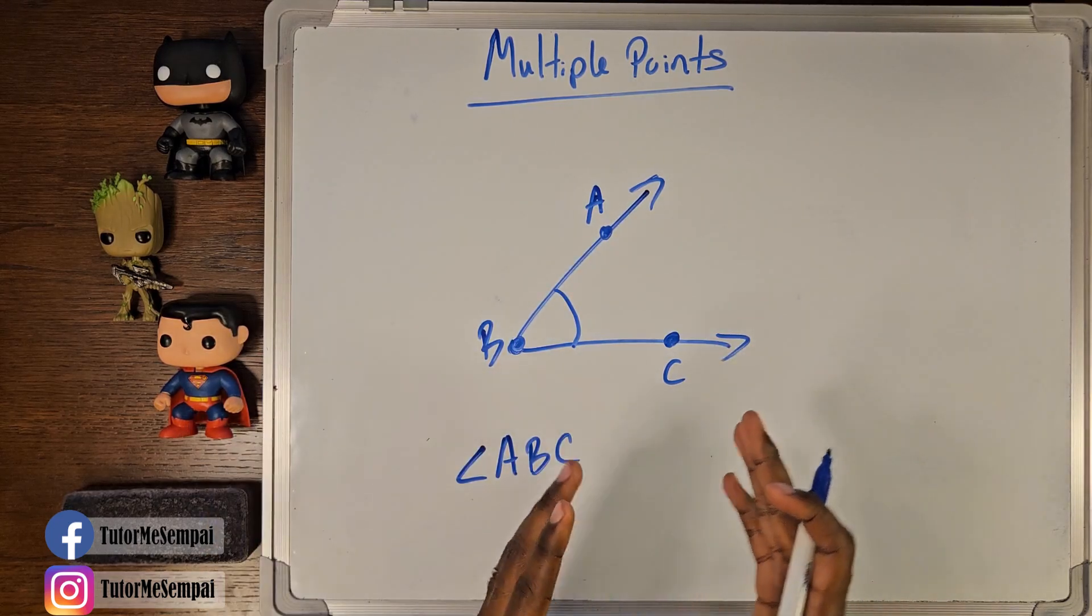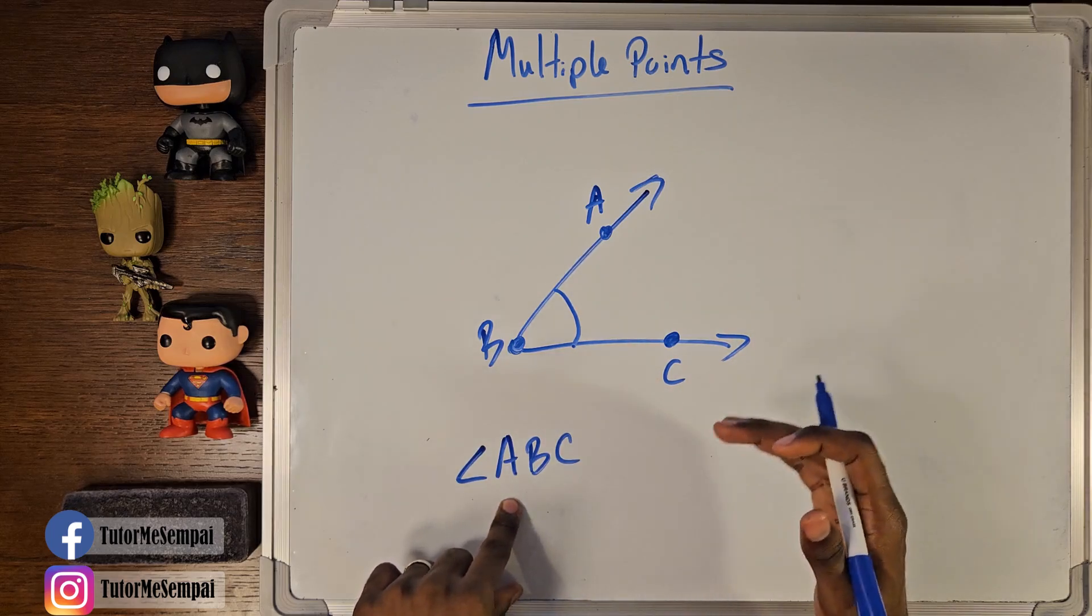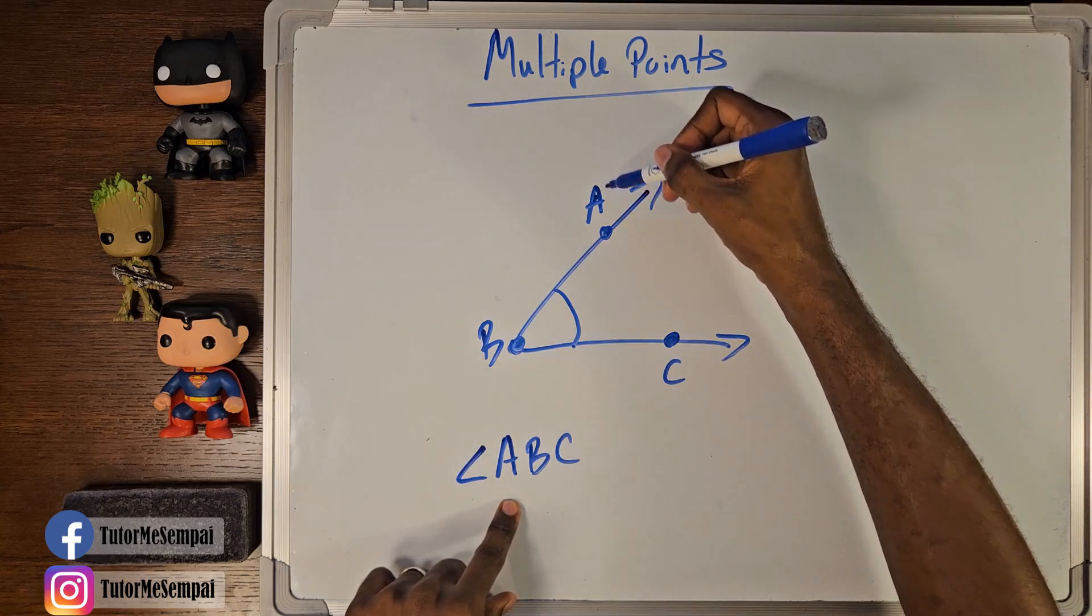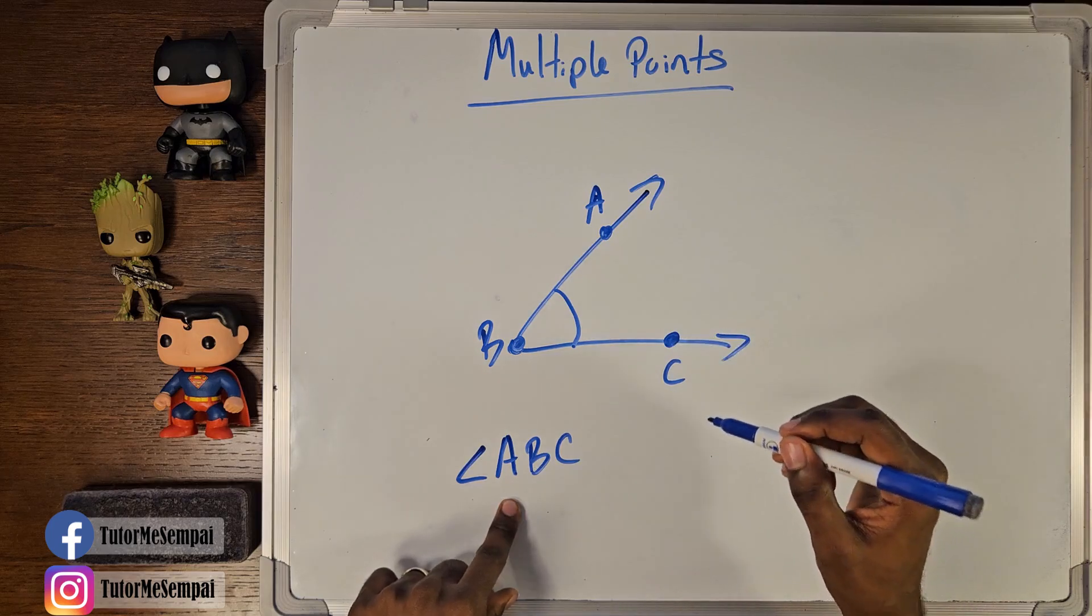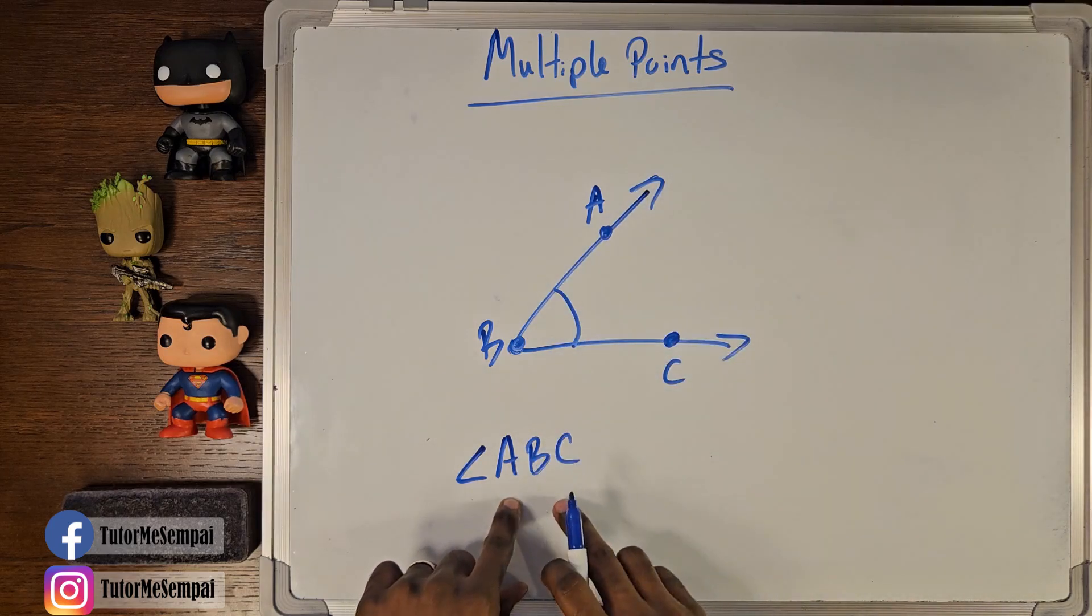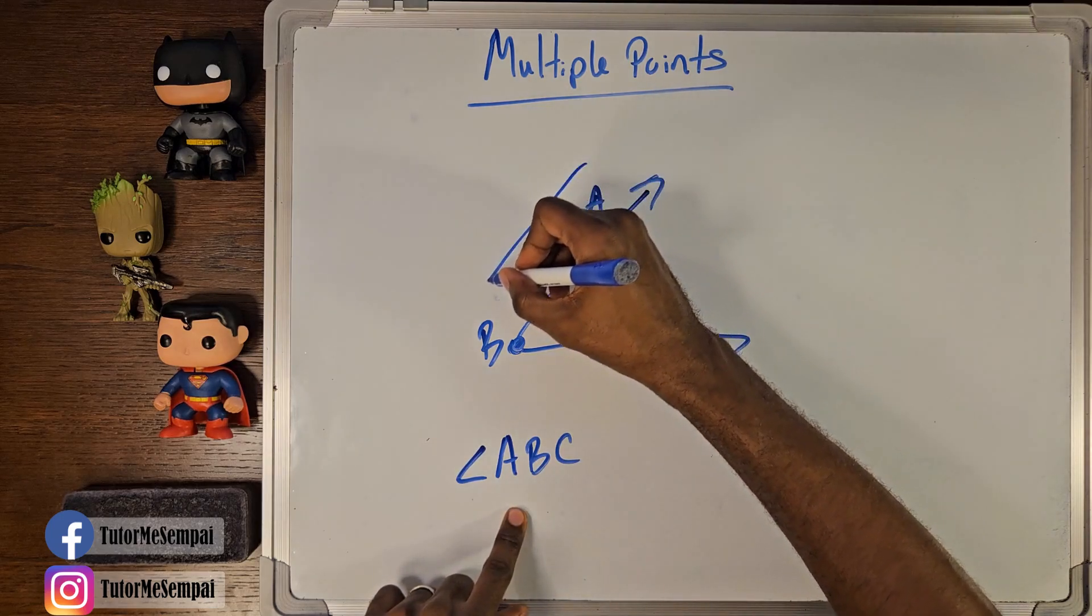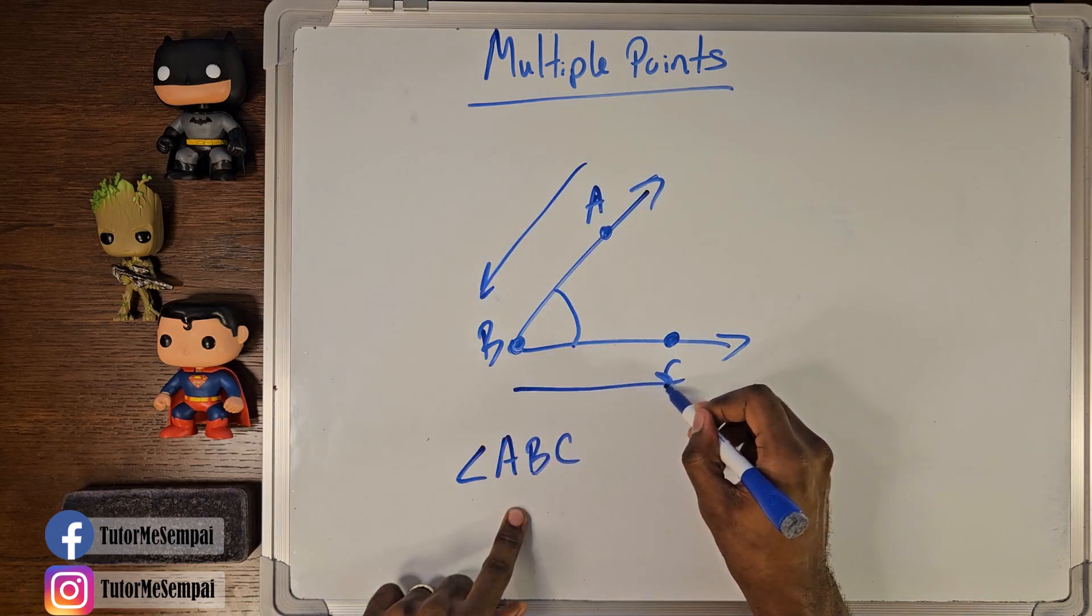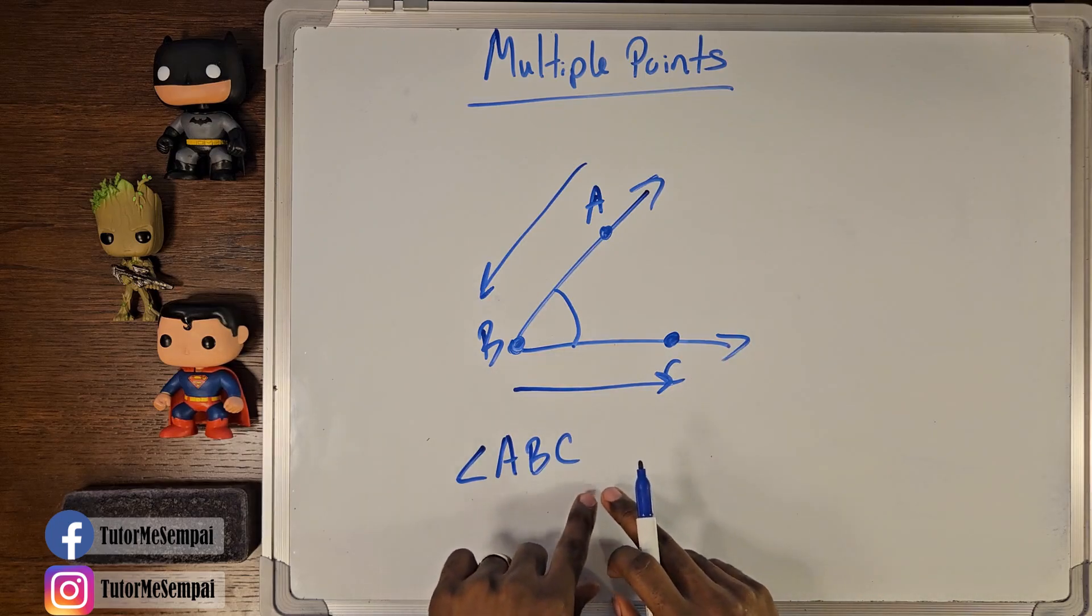Now why do we do it this way? Well, order matters when you're putting letters here. So we can't just say any combination of A, B, and C. We did that because we're traveling from one point on one ray to the other point on the other ray. So as long as you have three points, you can name your angle in this fashion. You have one point, and you're traveling this way, going towards your vertex, and then you're going to be going away from your vertex to the other point, A, B, C.